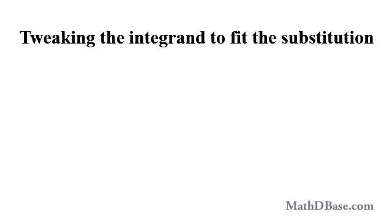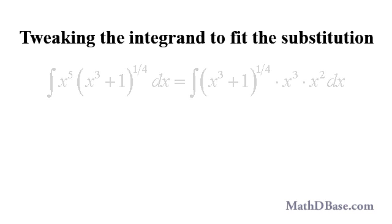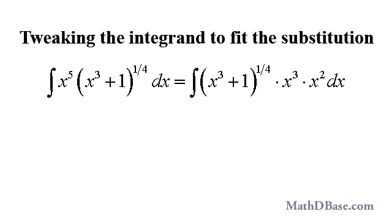In light of this substitution, let's rewrite the integrand so that certain other factors of the integrand will fit right in. x to the fifth can be expressed as x cubed times x squared.